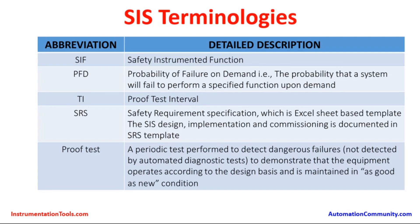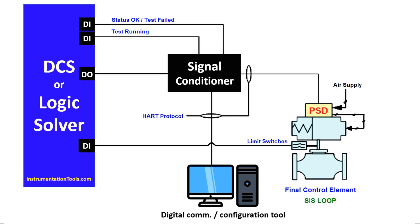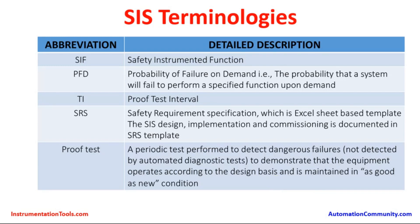Whoever will be working on SIS design has to understand and fill up the Safety Requirement Specification before going into the process implementation. Proof Test is a periodic test performed to detect dangerous failures which are not detected by automatic diagnostic tests, to demonstrate that the equipment operates according to the design basis and is maintained in as-good-as-new condition. A proof test is performed for the SIS sensors, logic solvers, and final elements.